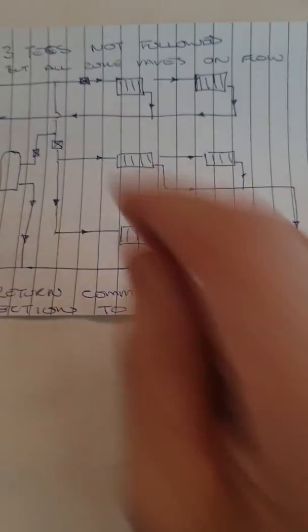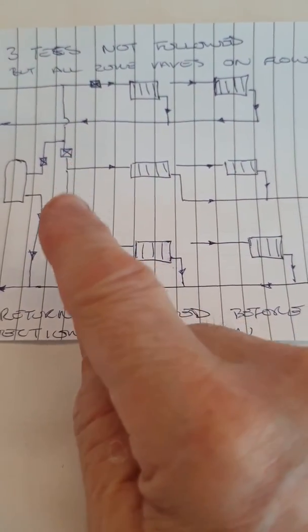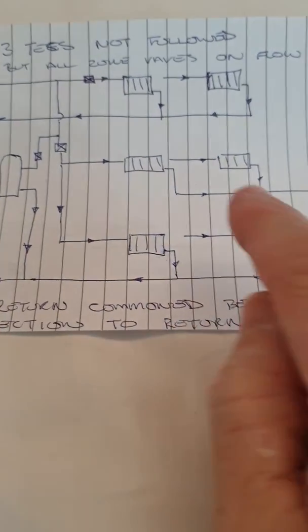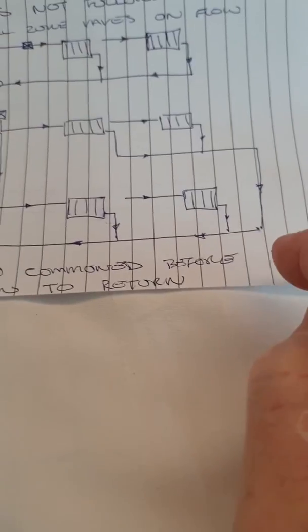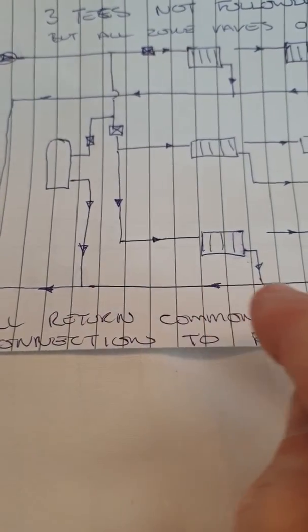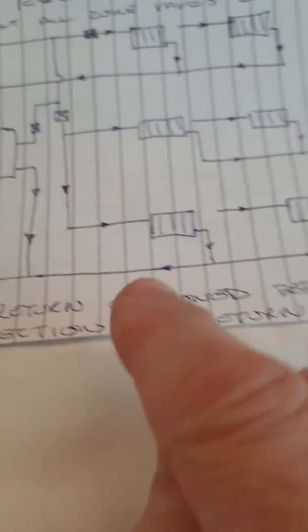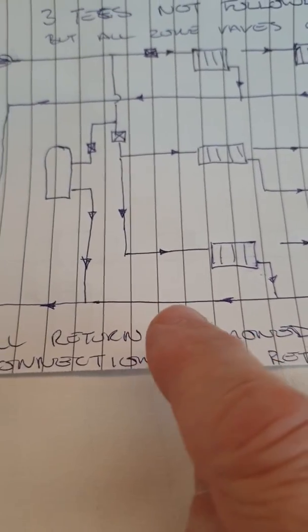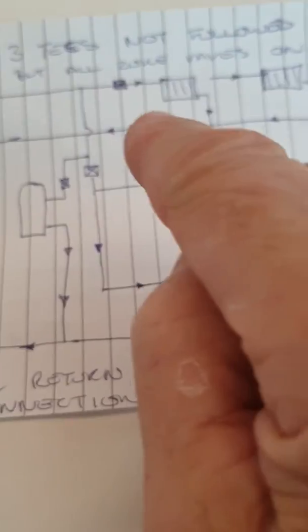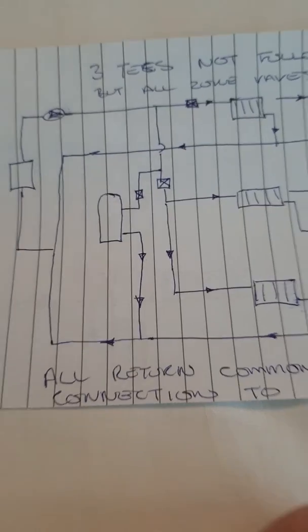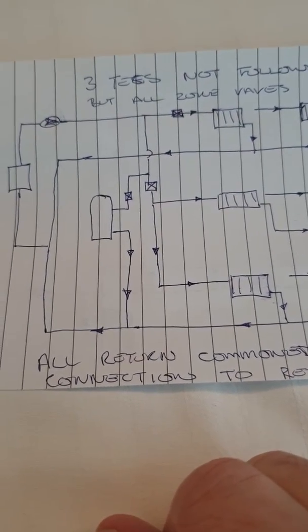I've got one zone valve here operating a circuit which has formed two circuits of radiators which are joined together at this point here. They become a single return to the system and I've got another zone controlled by zone valve here which comes back. And if you look at this I've deliberately broken the three T's rule both on the outgoing pipework and on the return pipework.